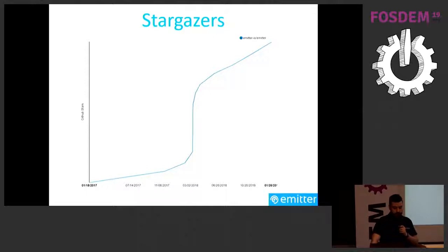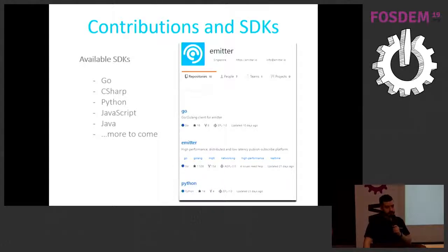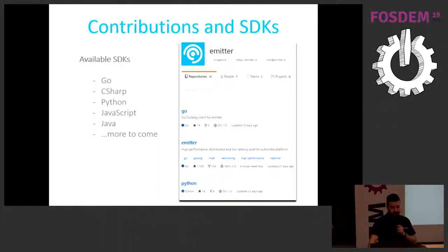Since last year we've enjoyed a lot of attention on GitHub. The stargazer graph shows a sharp increase, which brought us many contributions — some small like typo fixes in documentation, some bigger like changes to the core of Emitter. For example, we used to have keys per root channel; now we have keys per sub-channel — that was an external contribution, which is very nice.